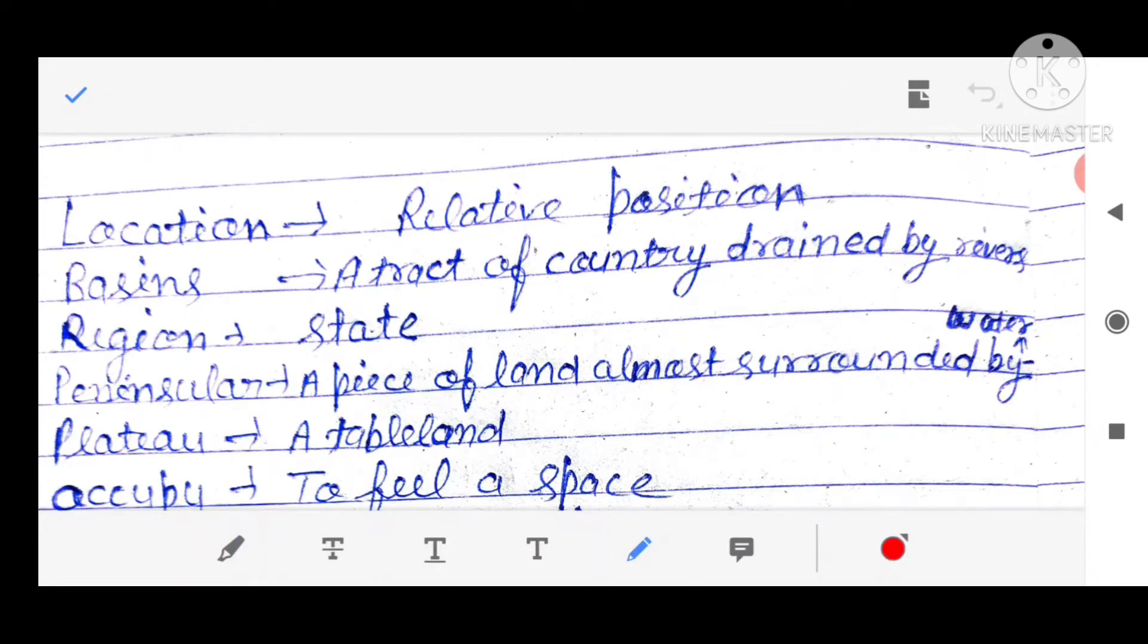Location, L-O-C-A-T-I-O-N, location means relative position, R-E-L-A-T-I-V-E. Basin, B-A-S-I-N, basins. A tract of country drained by rivers. किसी भी देश का वह हिस्सा जो कि नदियों के द्वारा drained किया जाता है, मतलब नदियों के पानी के द्वारा उसको सिंचित किया जाता है, उसको बोलते हैं Basin.